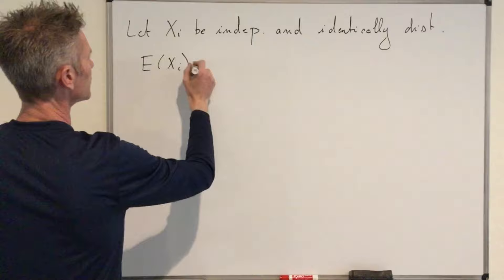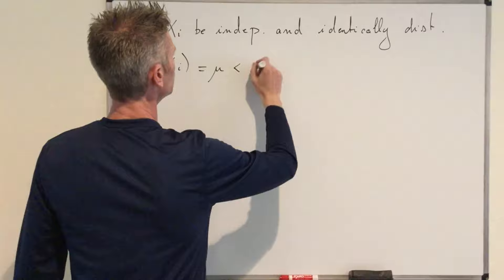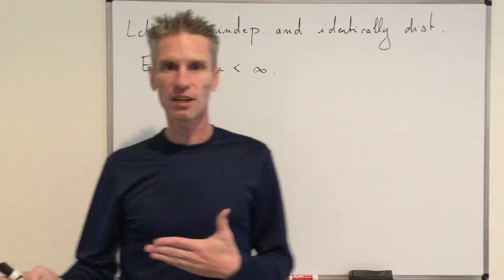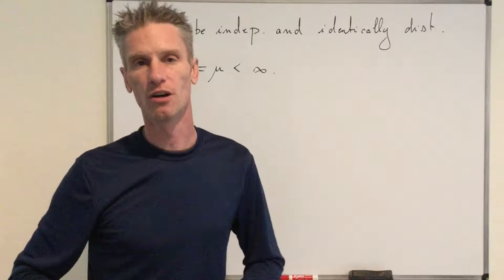I'm going to call the common value of their expected value mu. So the expected value of Xi is going to be equal to mu. And in the theorem, we need to assume that mu is finite. Now both versions — weak and strong — of the law of large numbers deal with some random object that I want to call the empirical mean.